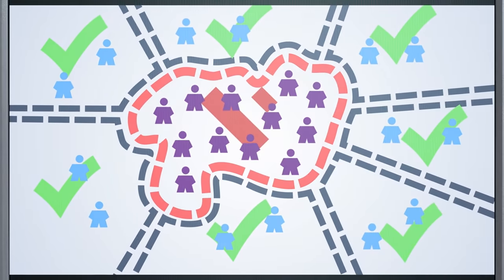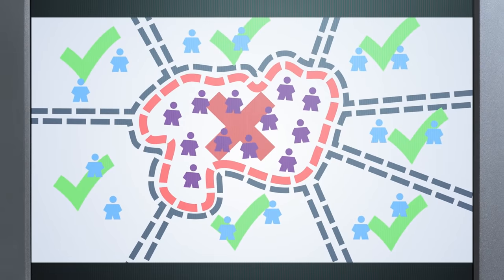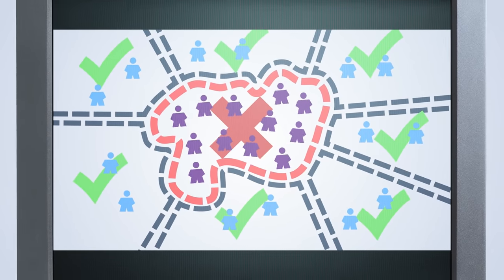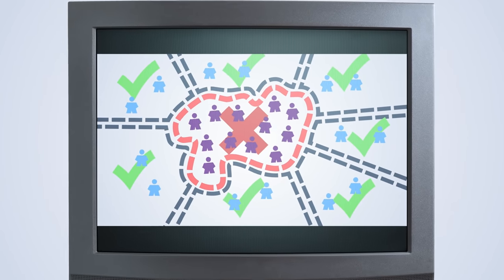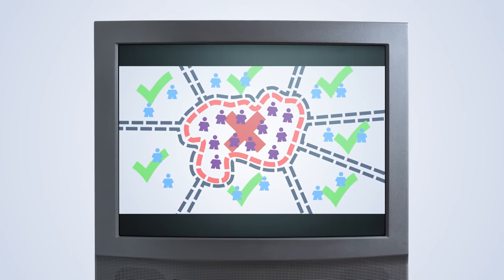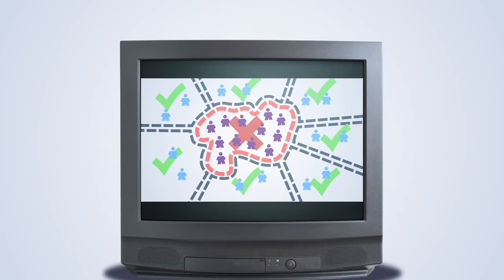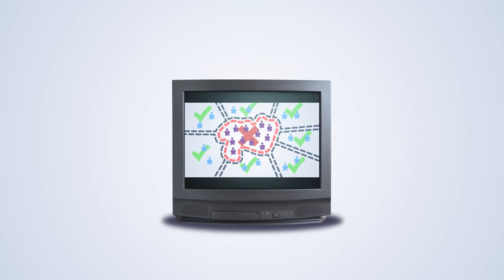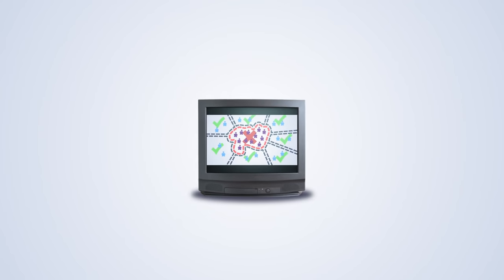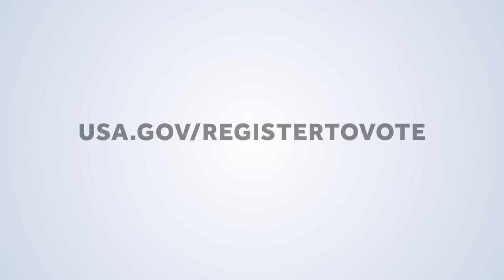Redistricting is complicated, with a lot more layers than we could fit into this video. But what you can control is your vote. You can make sure you're registered in time for the 2022 election. To find out more, go to usa.gov/register-to-vote.